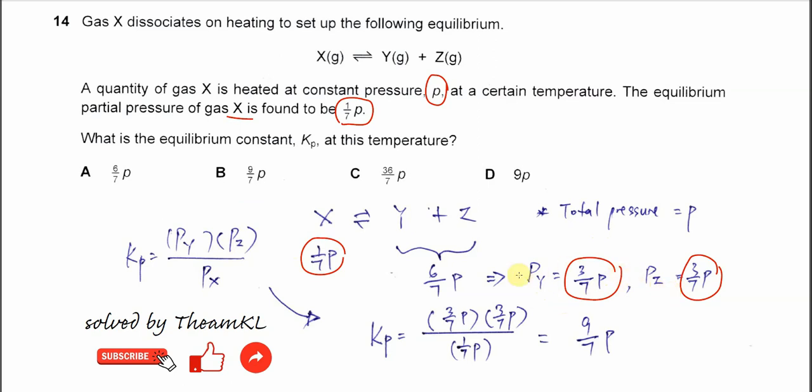Now we can substitute all the partial pressures, these three, into the Kp expression. The Kp expression for this equilibrium is partial pressure of Y times partial pressure of Z over partial pressure of X.